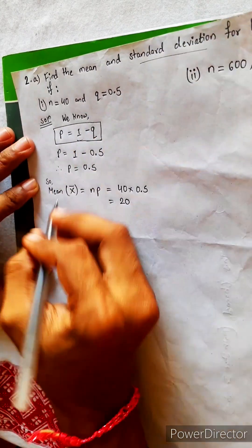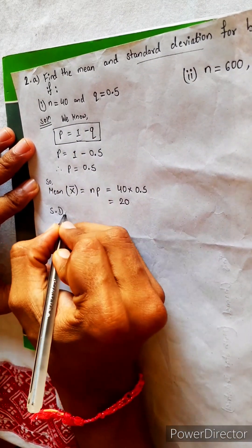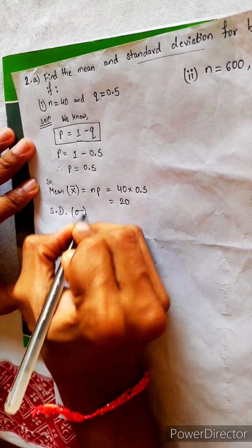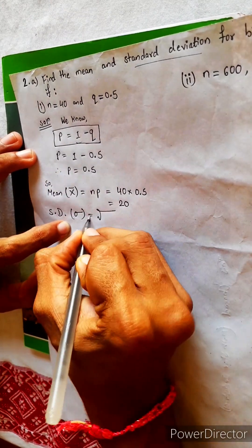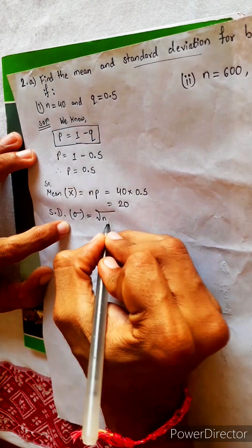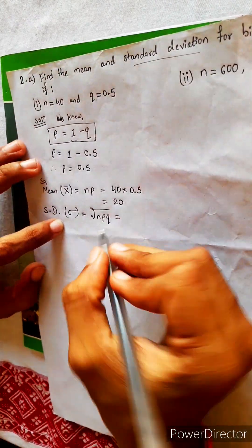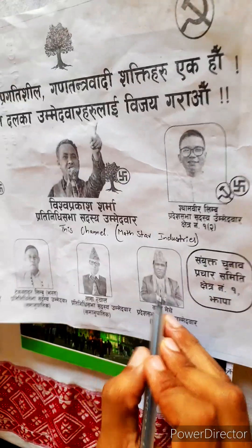Standard deviation — its symbol is sigma. The formula is under root NPQ. This is also a very easy formula. Even this person also knows this formula. So simple.